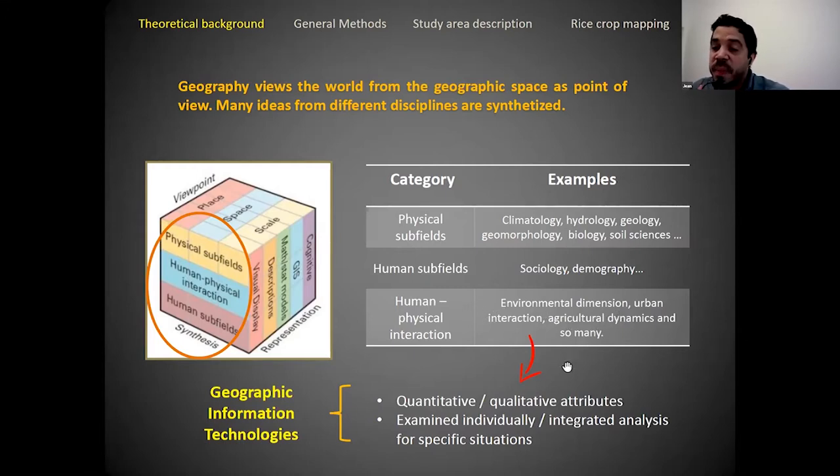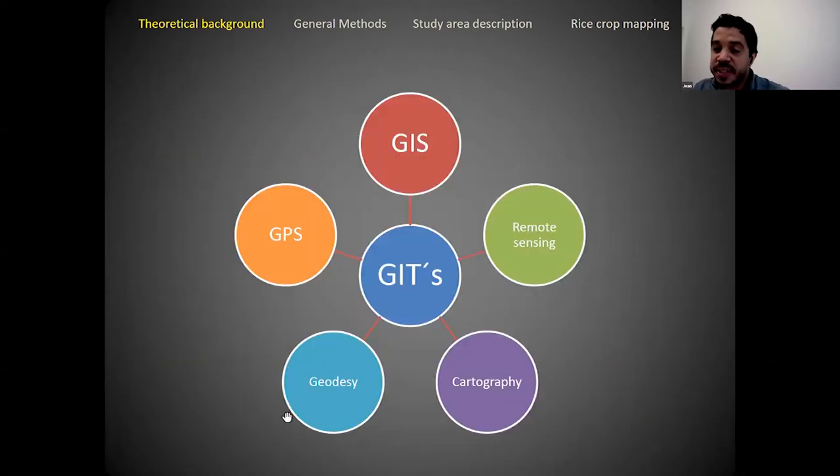These elements can have strong interactions resulting in environmental dimensions, urban interaction, and agricultural dynamics. We can have quantitative or qualitative analysis examining elements individually or through integrated analysis. We have geographic information technologies as an alternative.